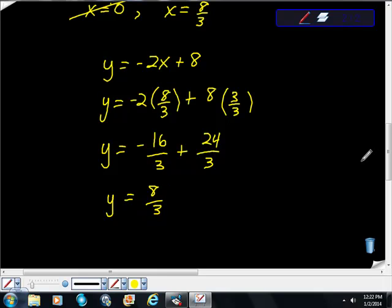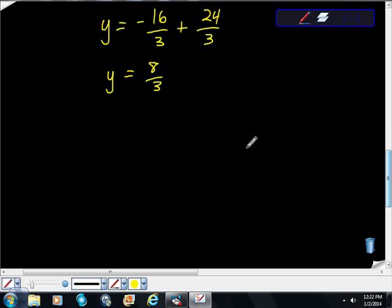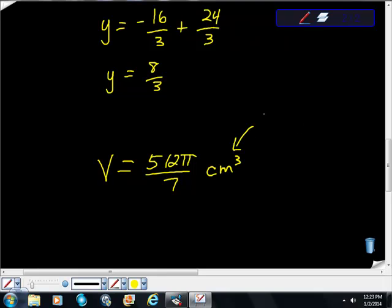All right, if we do that and plug this into volume, we get that our volume will equal 512 pi over 27. So hopefully this is really helpful for you. Volume still would be centimeters cubed. Don't forget units. Units. All right. Same thing.